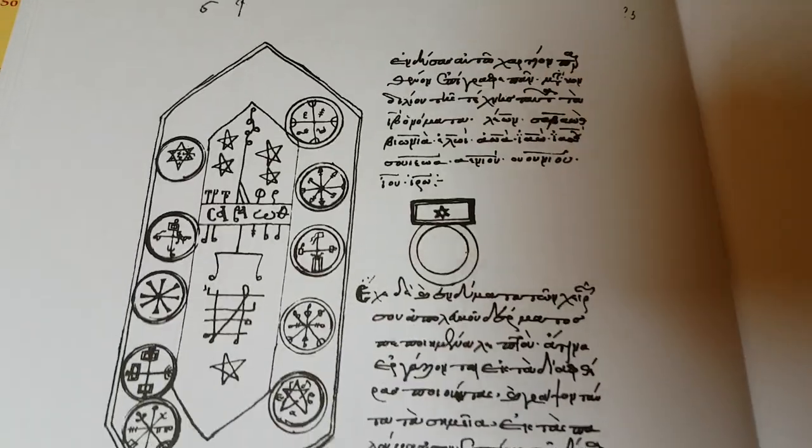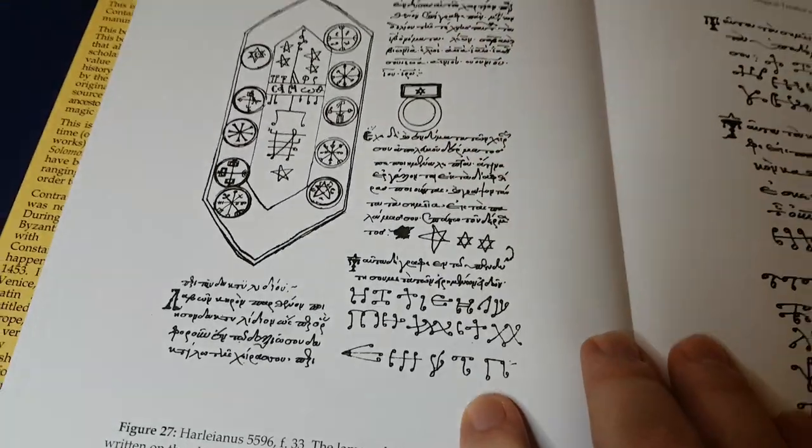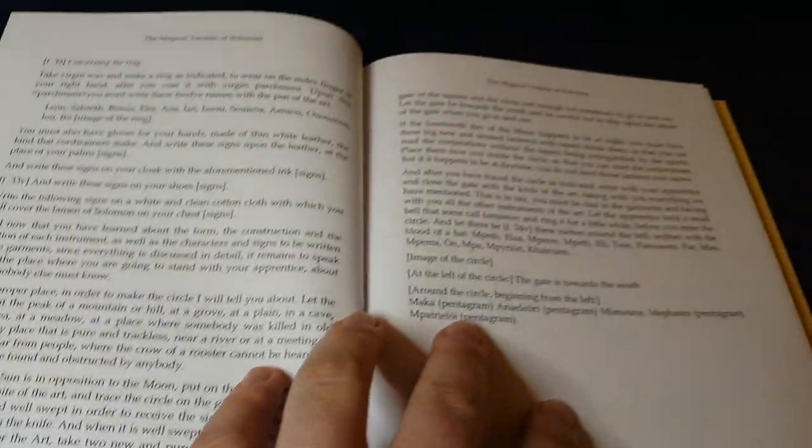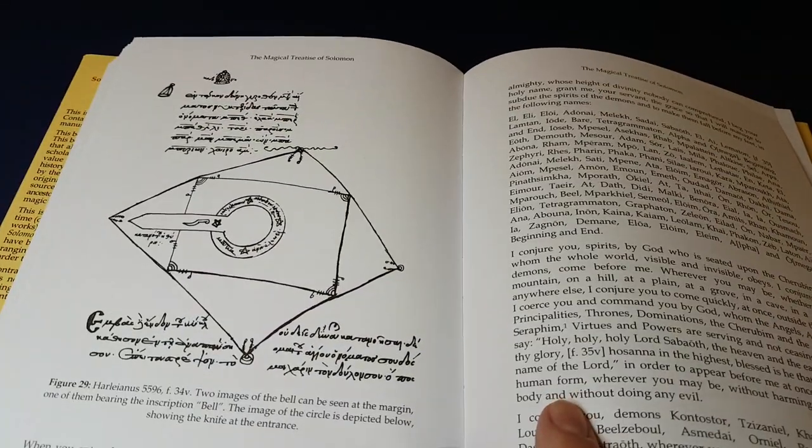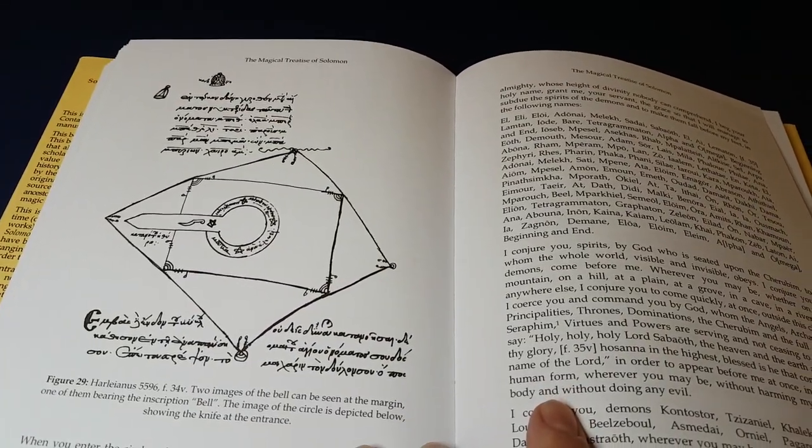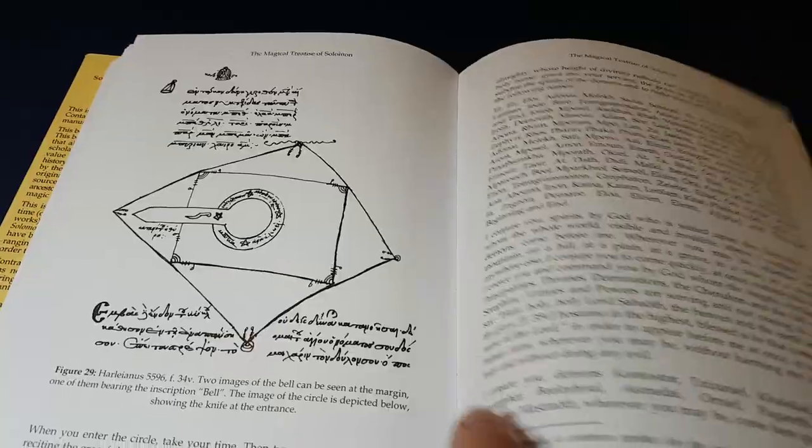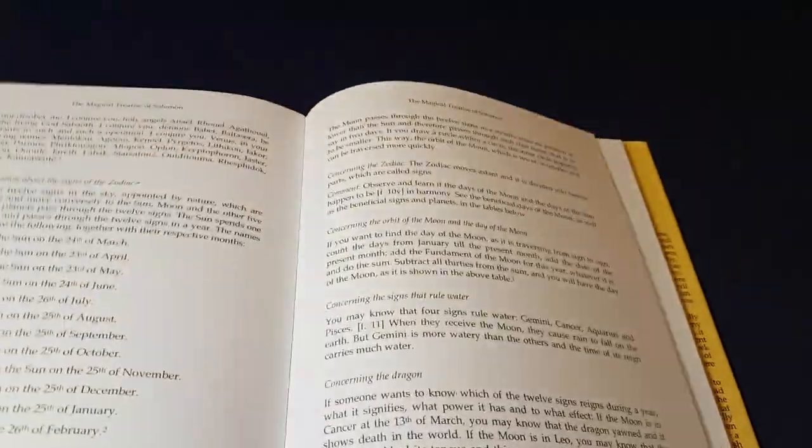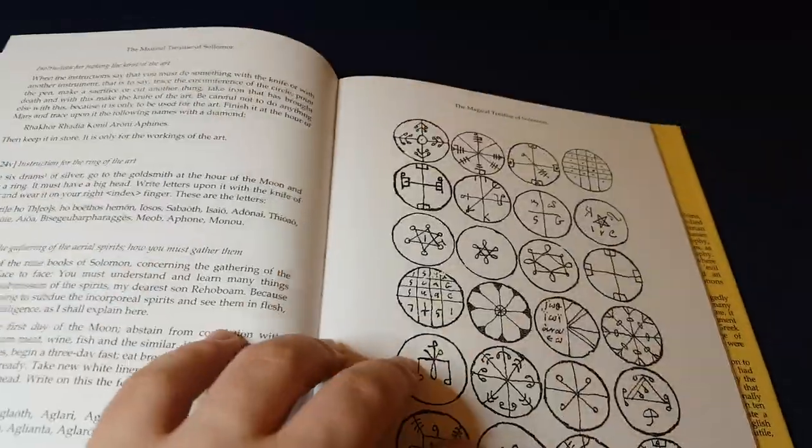I mean you can see that there is plenty there, and you can probably also tell how the Clavis, how the Key of Solomon, was clearly inspired by the information here.